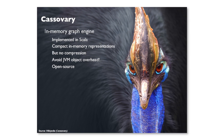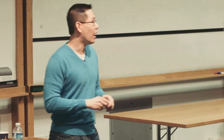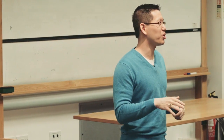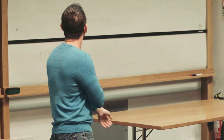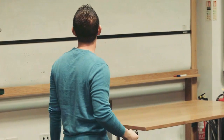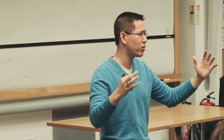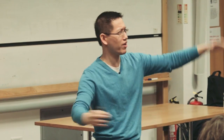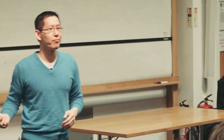The team built out the system called Cassavary — an interesting fact is that at Twitter, everything had to be named after birds. Cassavary is a fierce-looking bird native to Australia. What is it? It's an in-memory graph engine implemented in Scala. Twitter has this thing where they don't like Java; they like Scala. I describe Scala as 'Java for hipsters.' It uses compact memory representations but no compression — it's almost like coding C in Java. You allocate really big memory arrays and do memory management yourself. It's open source and available on GitHub.